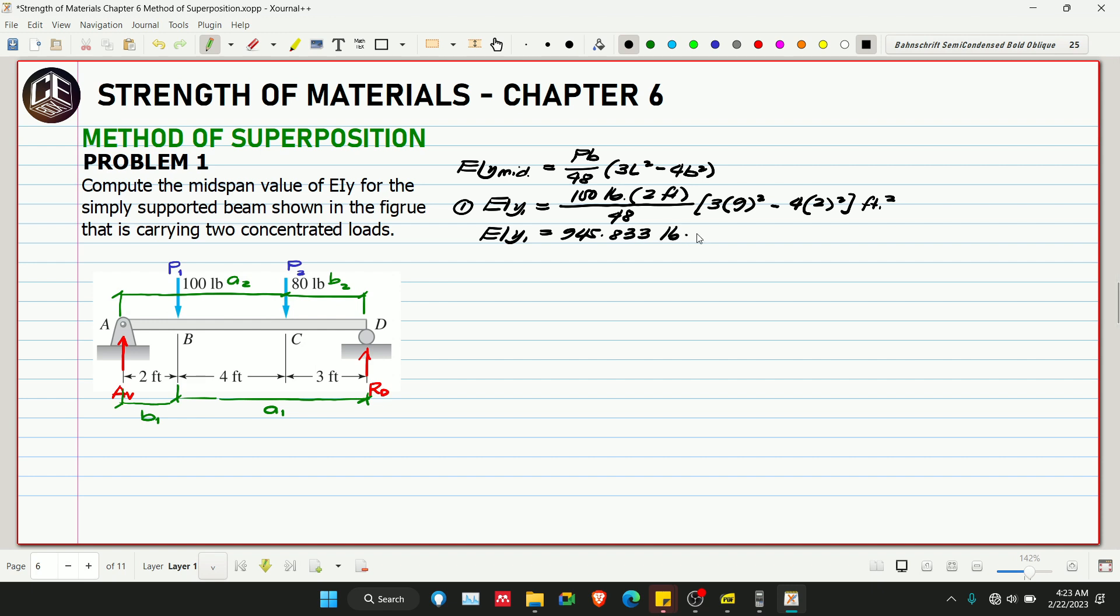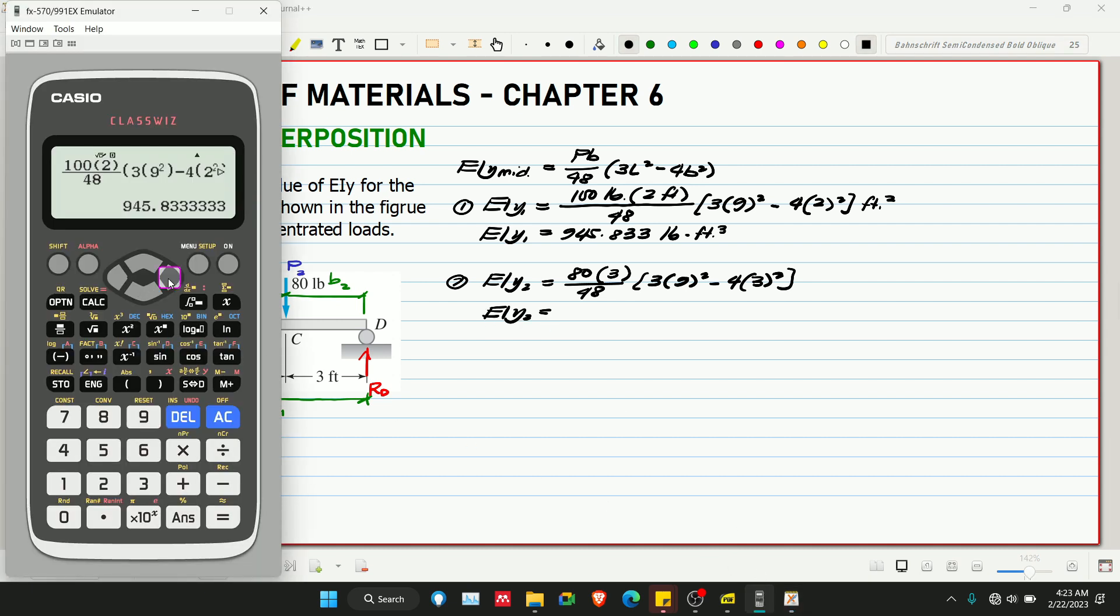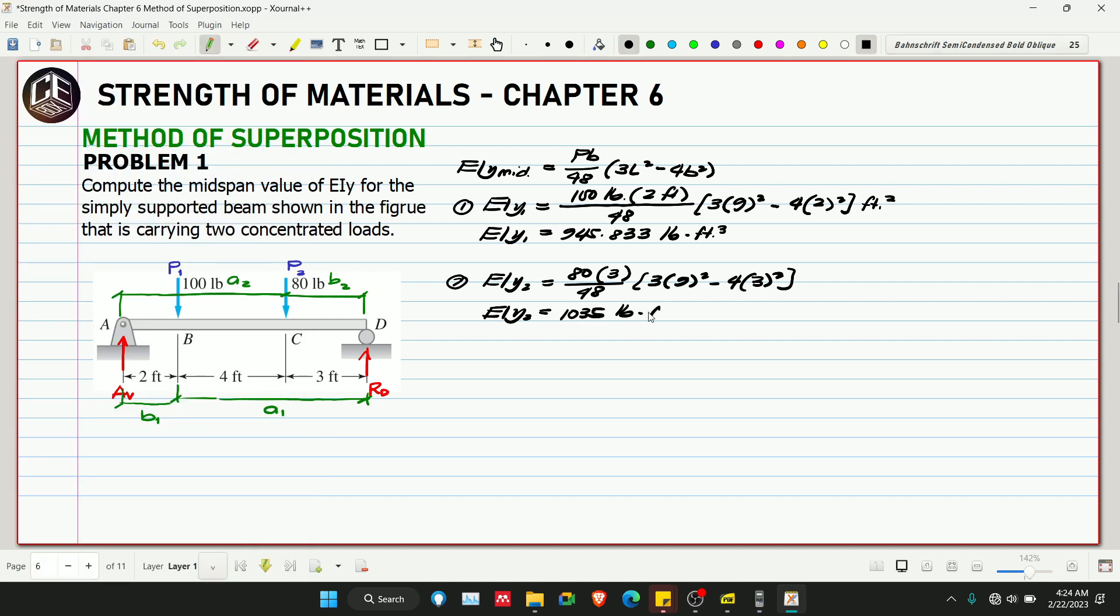For the 80 pounds load, our EIy2 equals P of 80 pounds. We don't need to include the unit since we're consistent with EIy1. Multiplied by b which is 3 feet, over 48, multiplied by 3 times 9 squared minus 4 times 3 squared. This is our EIy2. So 80 times 3, and b is 3. This gives 1035 pounds-feet cubed.